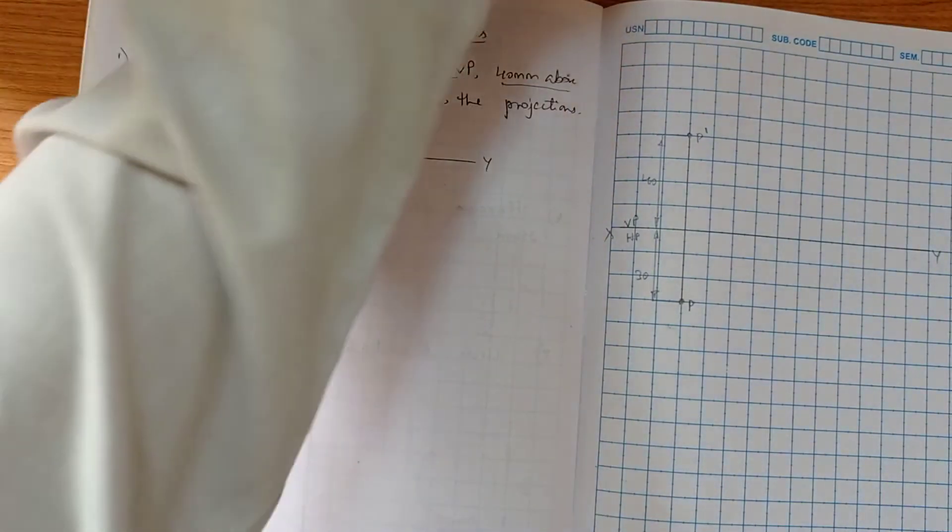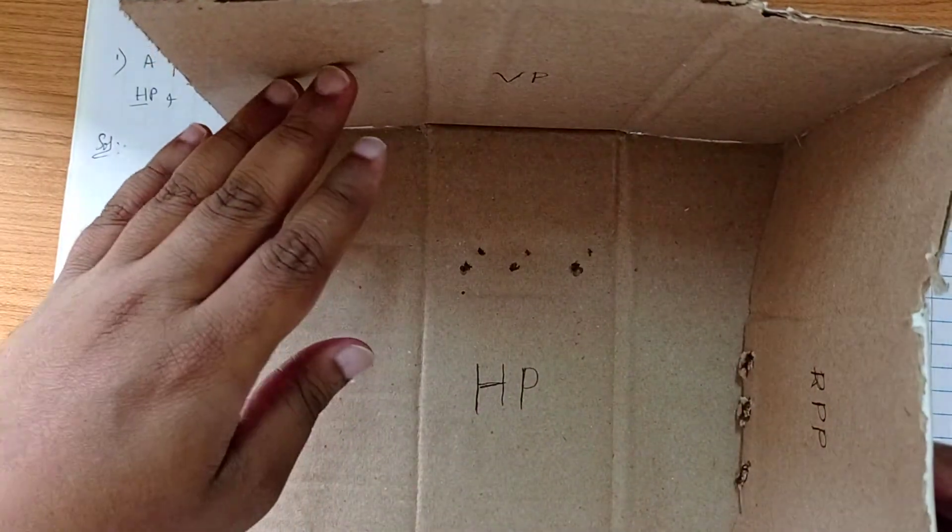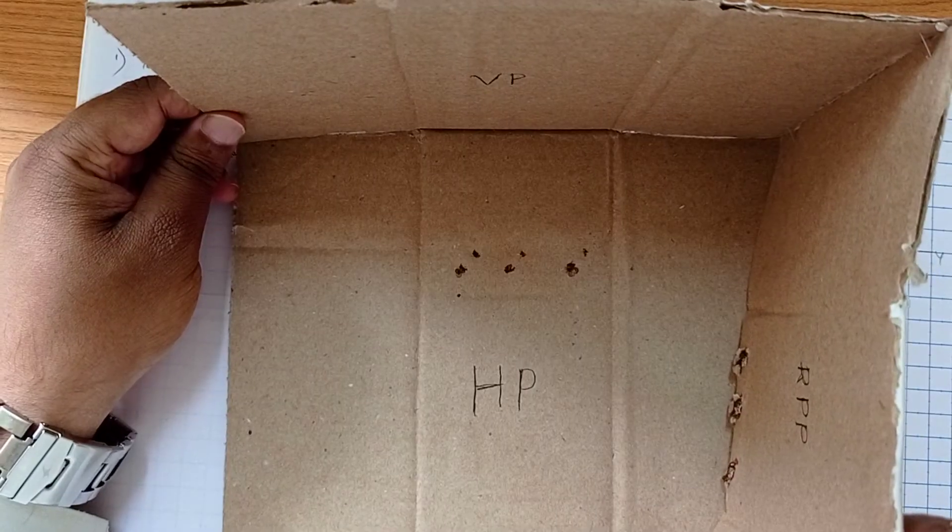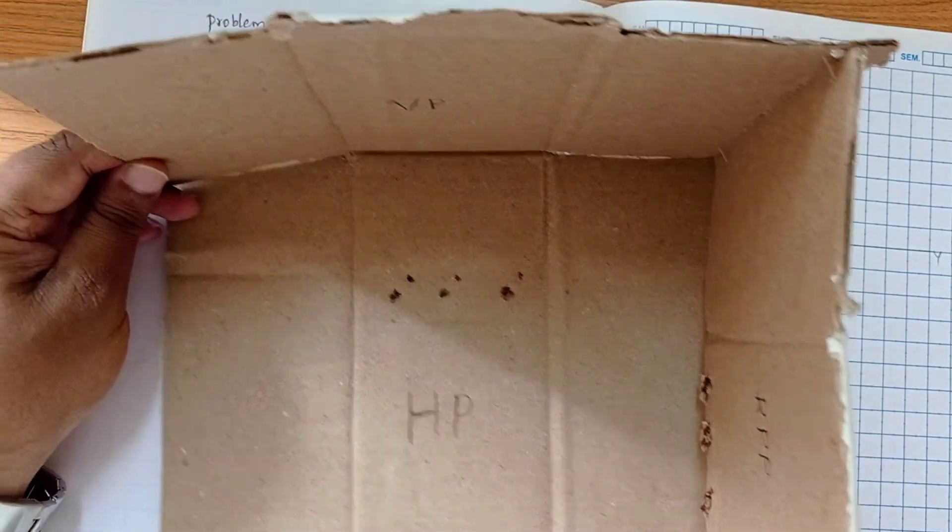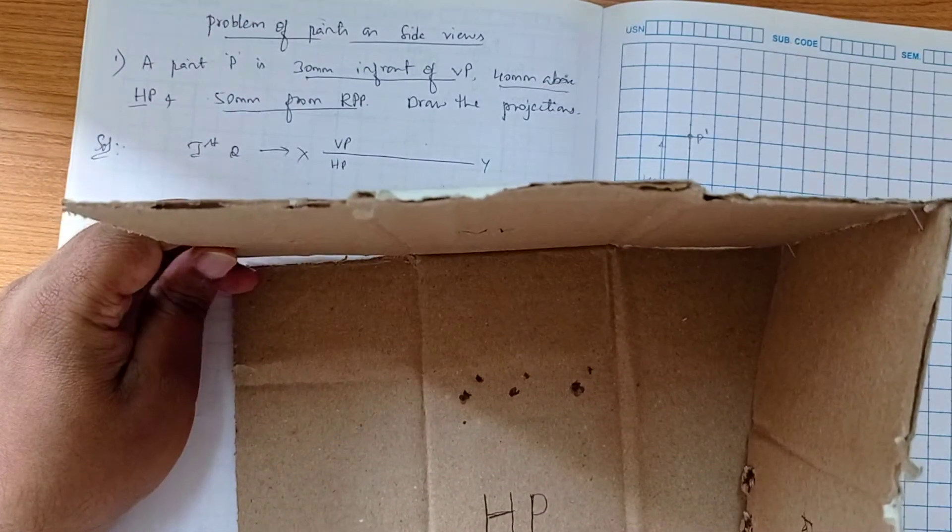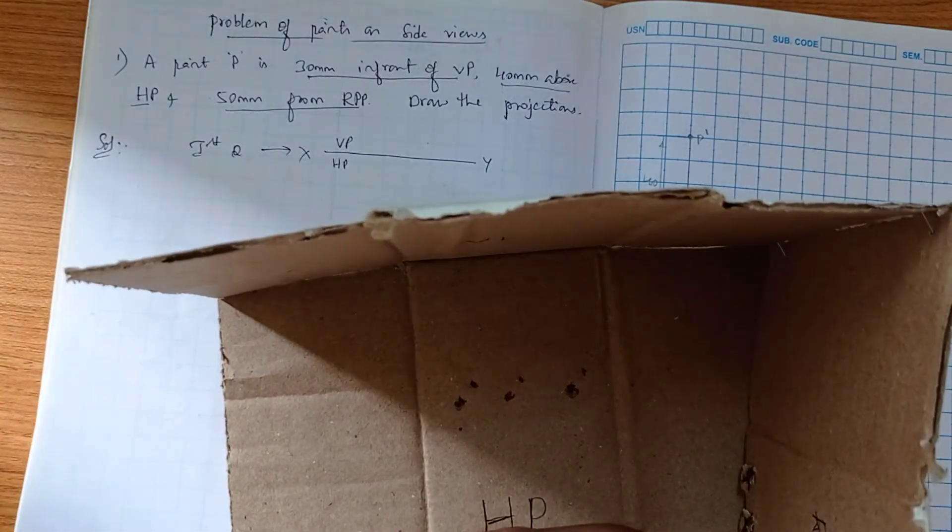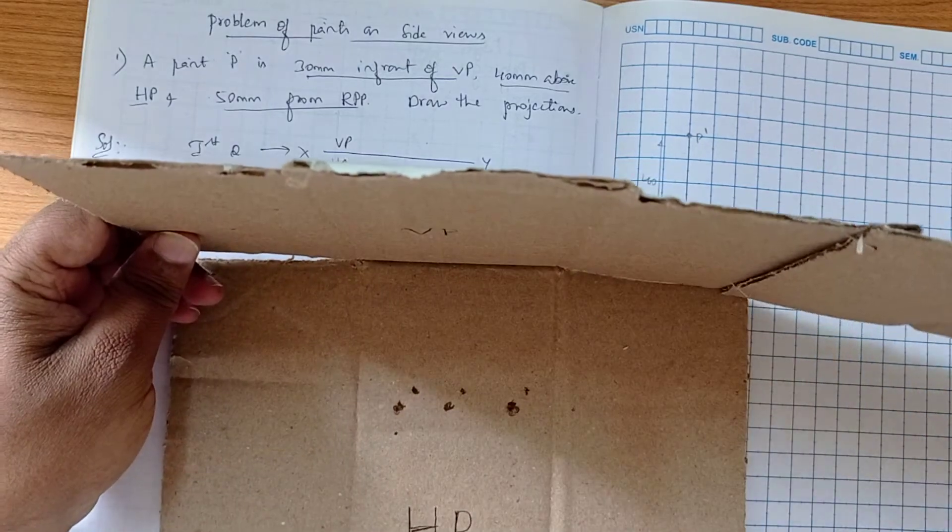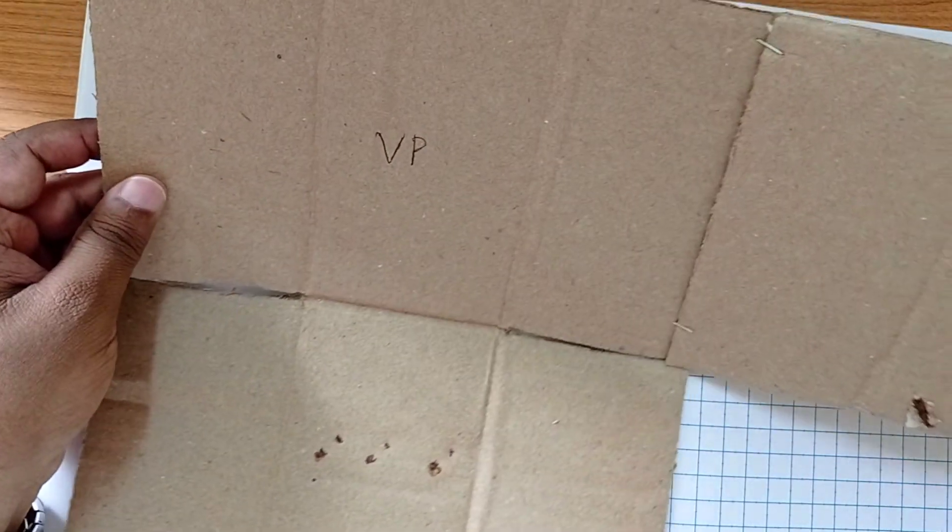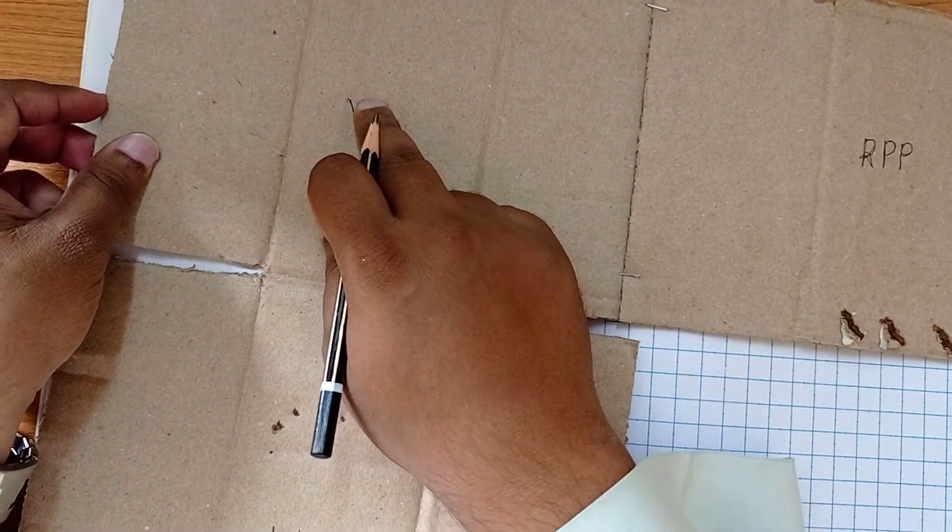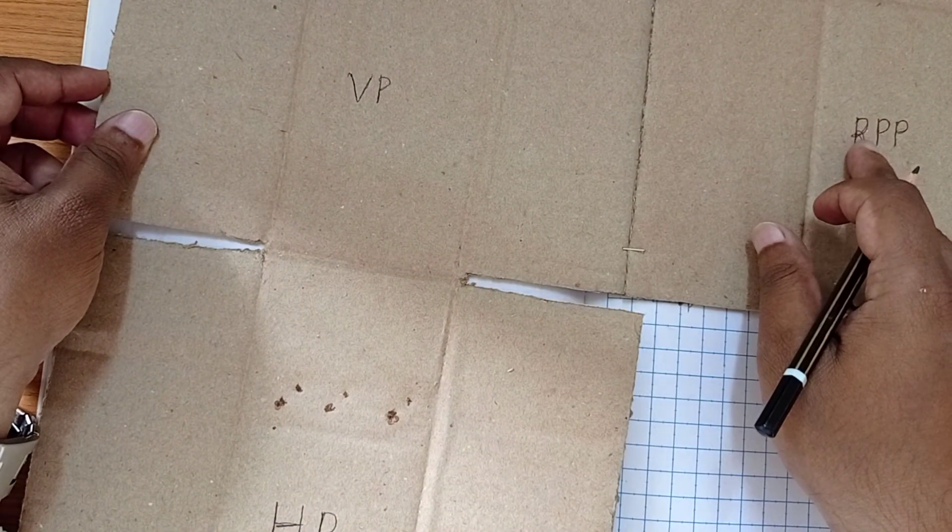Where is it exactly? In the quadrant you can see this: this is our HP plane, this is vertical plane, and this is our right profile plane. This right profile plane is adjacent to the vertical plane. In this problem he is mentioning that point P is 30mm in front of VP, 40mm above HP, and 50mm from the RPP. It will be there adjacent to the vertical plane. When it is drawn in the orthographic, it will be like this: front view, top view, this front view connected with the side view.